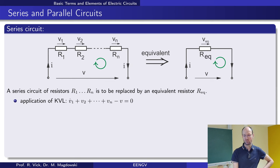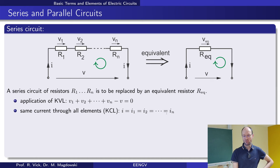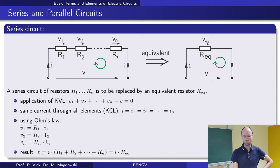The individual voltages sum up to give the total voltage V. The current through each element is the same — that's what Kirchhoff's current law tells us. We can then use Ohm's law at each individual resistor and insert those voltages into the voltage law to get the result.